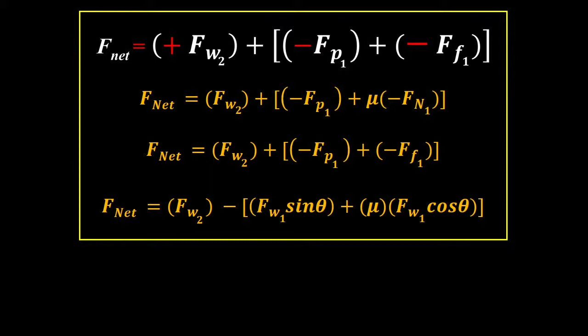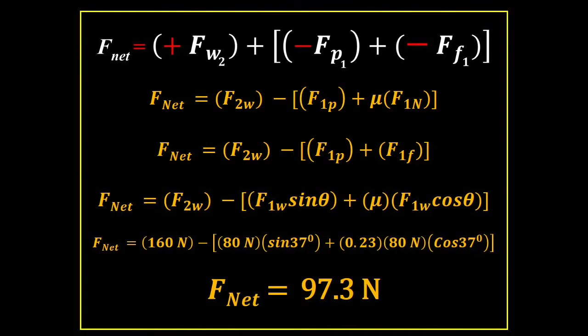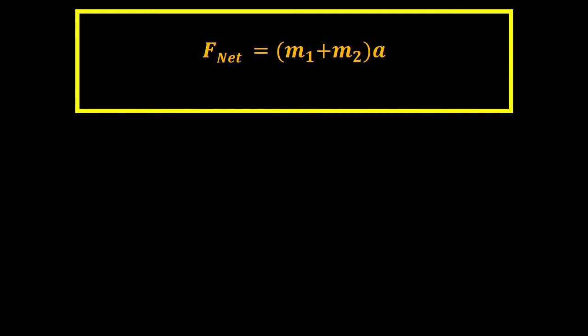We know that, for instance, FP is going to be FW sine theta, and so on, so we're going to say negative that quantity, we're just going to factor out the negative signs, that's all we're doing there. And then the value is 97.3 Newtons, that's going to be the net force of the system.